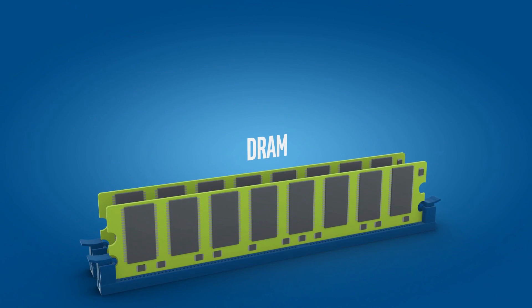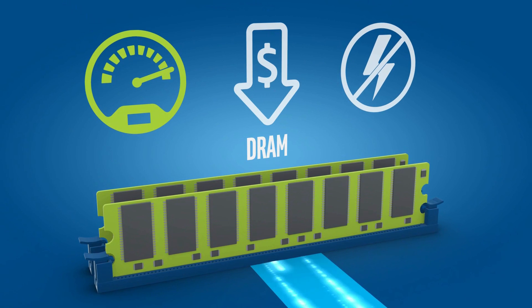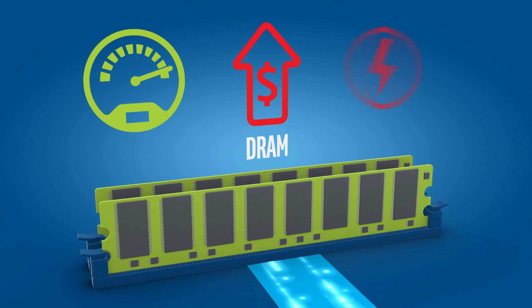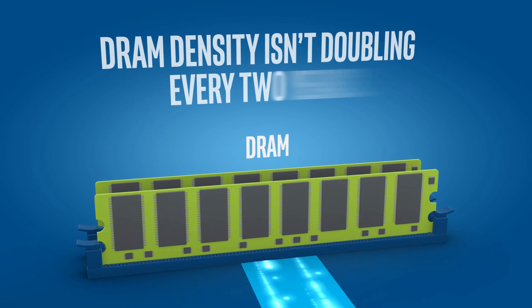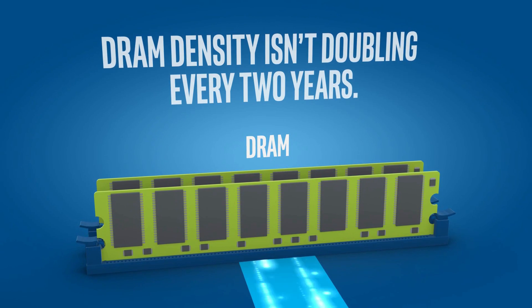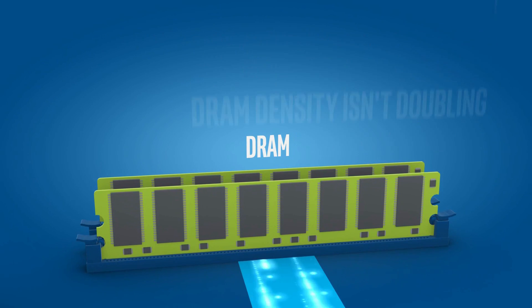DRAM memory is great because it's very fast, but it's also very expensive and it's volatile. And unlike many silicon components, DRAM density isn't doubling every two years, so it's hitting a wall.